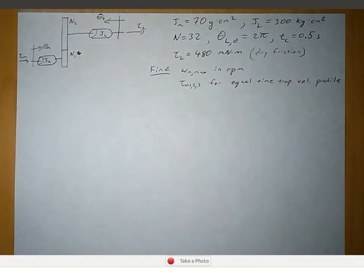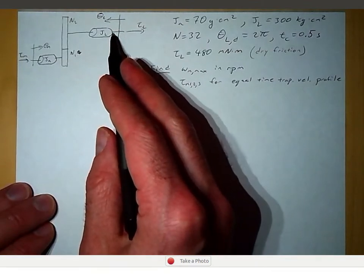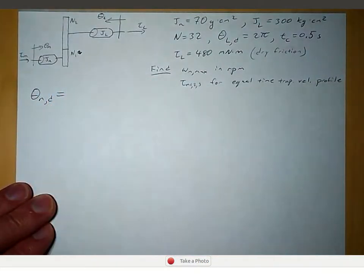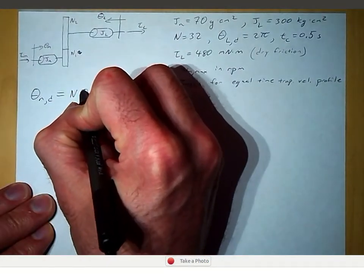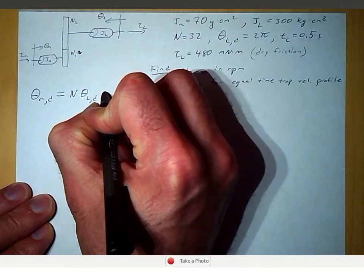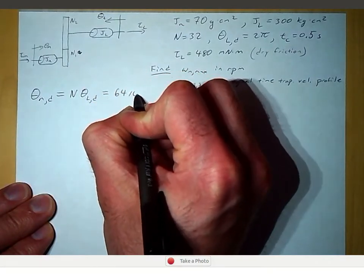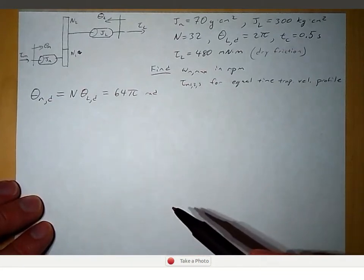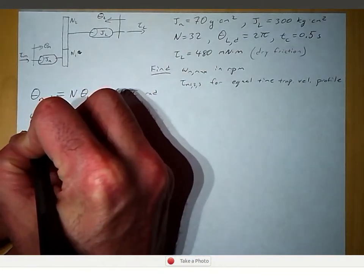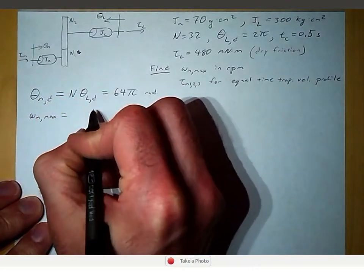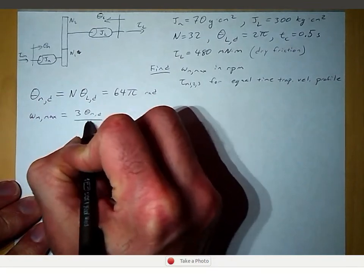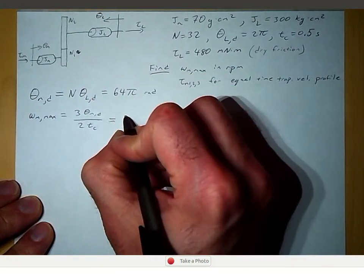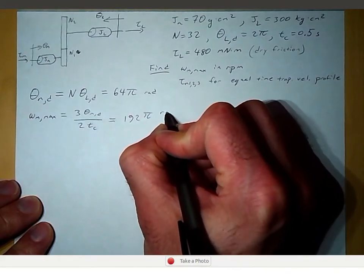In order to find the maximum motor speed, we need to translate the load shaft displacement to the motor shaft. We call that theta_md, the desired motor shaft displacement, which is the product of the gear ratio and the desired load shaft displacement. That is 64 pi radians. Using an equal-time trapezoidal velocity profile, the equation for maximum motor speed is 3 times theta_m_desired divided by 2 times the motion time, which equals 192 pi radians per second.